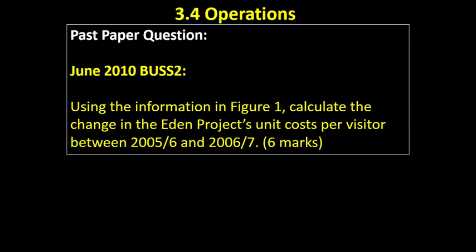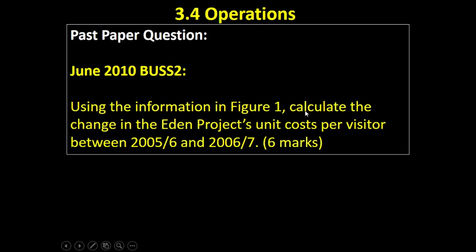So let's have a look at a quick question. This is from a past paper from 2010. My advice would be: when you come to a case study in the exam, look at the questions that are asked before you read the case study, so you know what information you're looking out for. I can see that I'm going to be looking for data to help me calculate the change in the Eden Project's unit cost per visitor between 2005–2006 and 2007. Helpfully, it tells me it's in Figure 1, so I shouldn't need to look too hard.